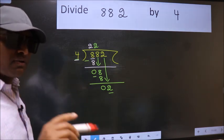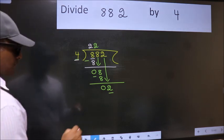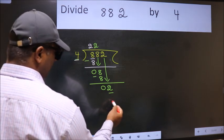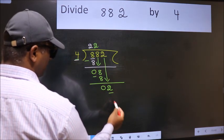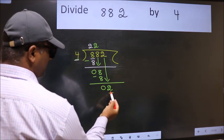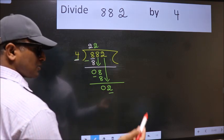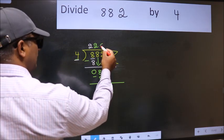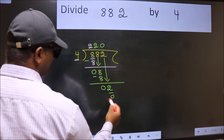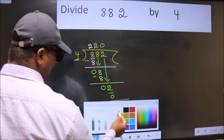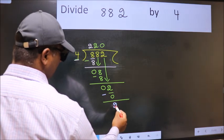Instead of that, what we should think of doing is which number should we take here? If I take 1, we will get 4. But 4 is larger than 2. So what we do is we take 0 here. So 4 into 0, 0. Now we subtract. We get 2.